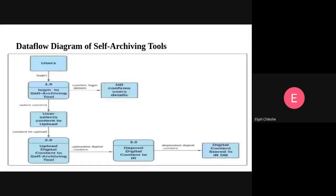Since these tools must interface with the institutional repository, here is a data flow diagram explaining the process of depositing content. The user logs into the self-archiving tool, then selects the content they want to upload. After selecting, they upload the digital content onto the self-archiving tool. The tool then deposits the content onto the institutional repository, where it is stored in the database at the University of Zambia's institutional repository.